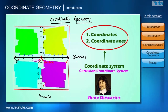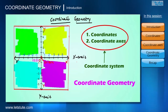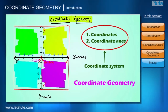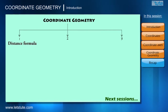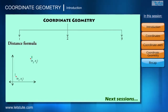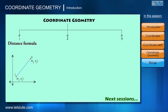Therefore, this coordinate system is named after him as the Cartesian coordinate system. When the concepts of this coordinate system are used in geometry, it is called coordinate geometry — that is our title. In the next few sessions we are going to learn three important concepts: number one, the distance formula, where we find the distance between two points given their coordinates.